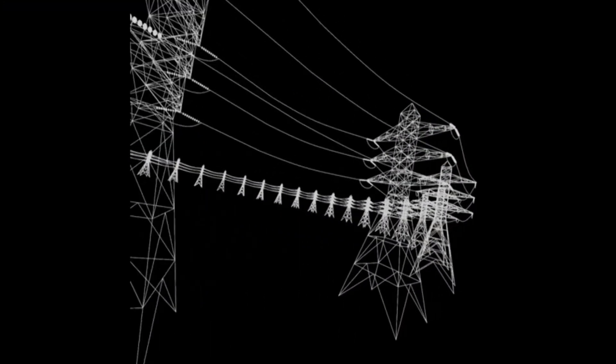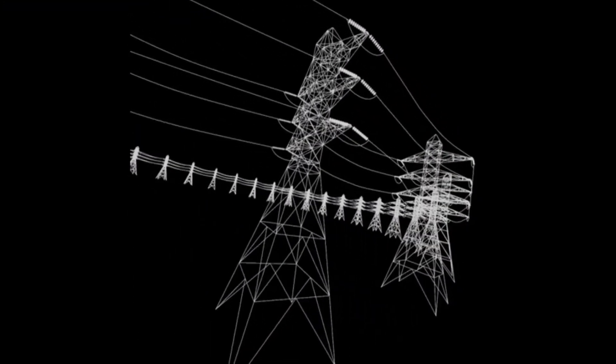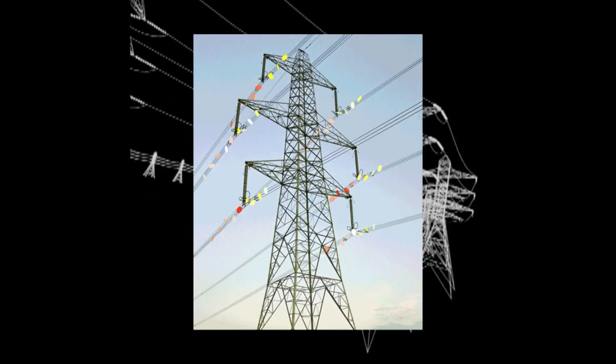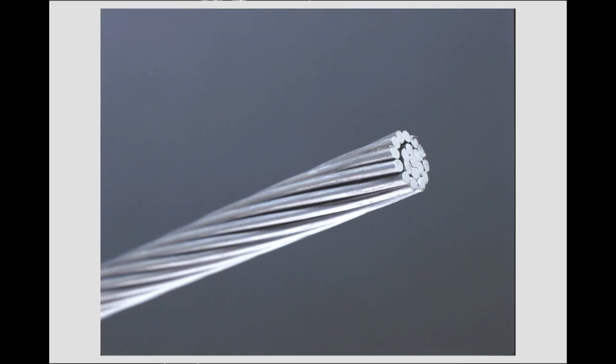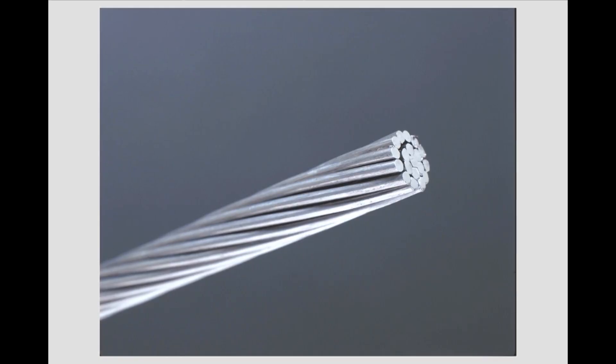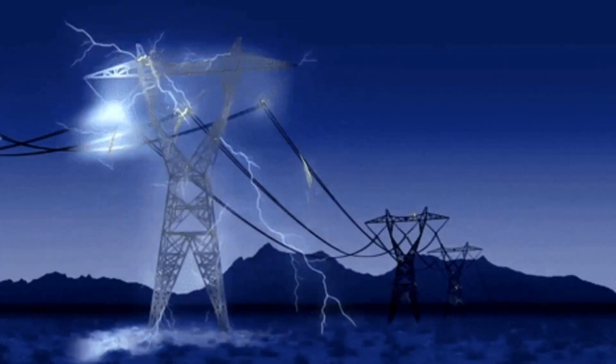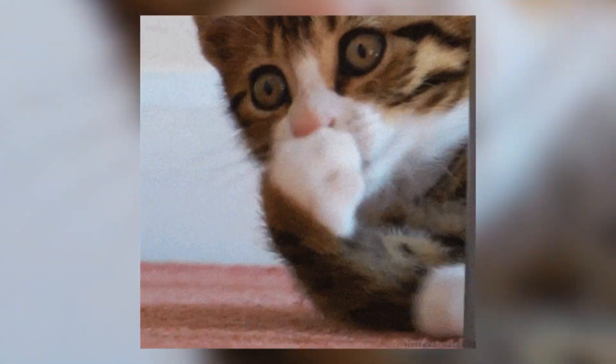Take your overhead transmission lines for example. The cables themselves are bare conductors and we can never touch them. But what separates us from their electric field is actually the air itself and those beams from which they hang. Without them, things could get a little shocking.